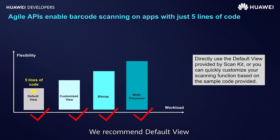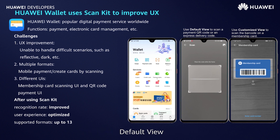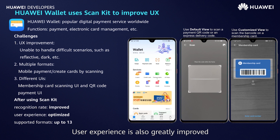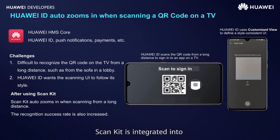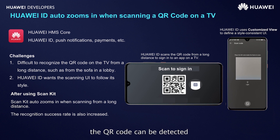We recommend the default view as this requires very little code for integration. Now let's look at some examples of how Huawei ScanKit can be integrated into apps. Huawei Wallet integrated ScanKit's default view for its QR code payment function, which allows support for 13 barcode formats and significantly increases the scanning success rate. ScanKit is also integrated into the function of scanning a QR code to sign in with a Huawei ID. Even when scanning a QR code on a screen that is far away, the QR code can be detected, automatically magnified, and accurately identified.